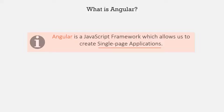So what is a single page application? A single page application is an application which has only one HTML file. A perfect example of a single page application is Gmail and Netflix. In a single page application, you can navigate around and in the URL it will seem like we are visiting different pages — but in reality, the page never changes. Only the content of the page changes.